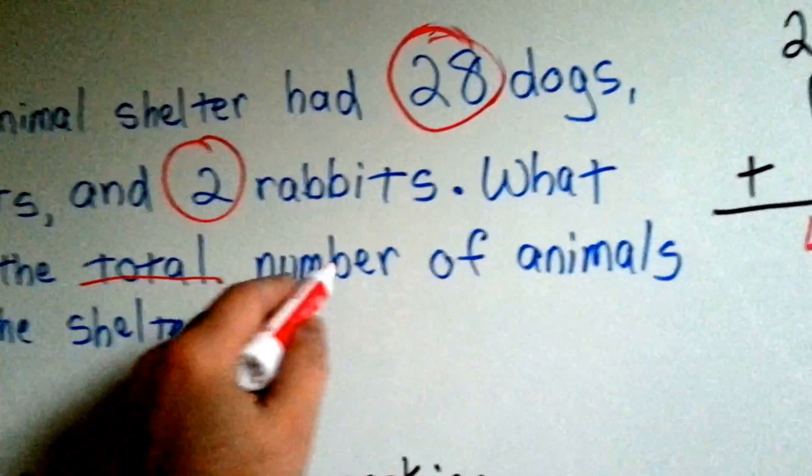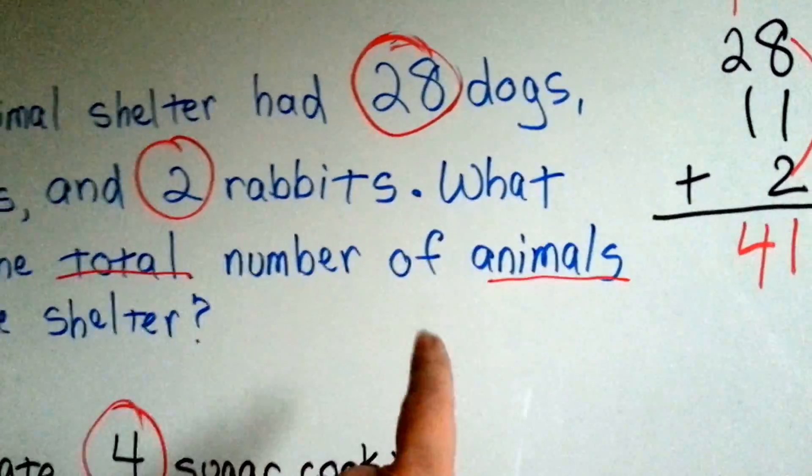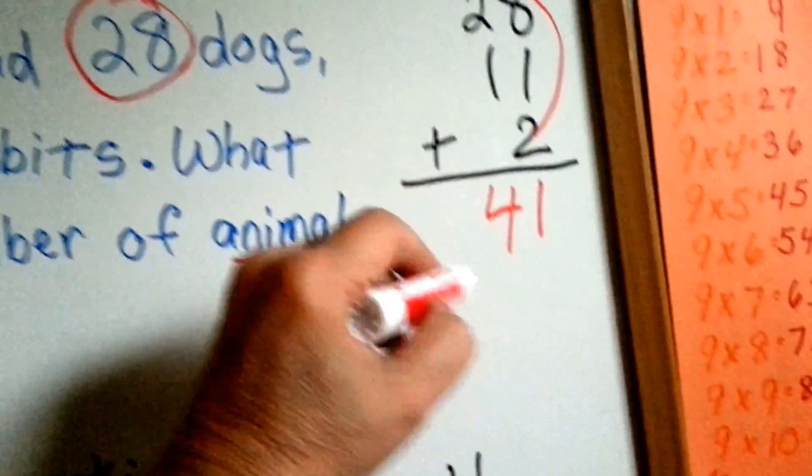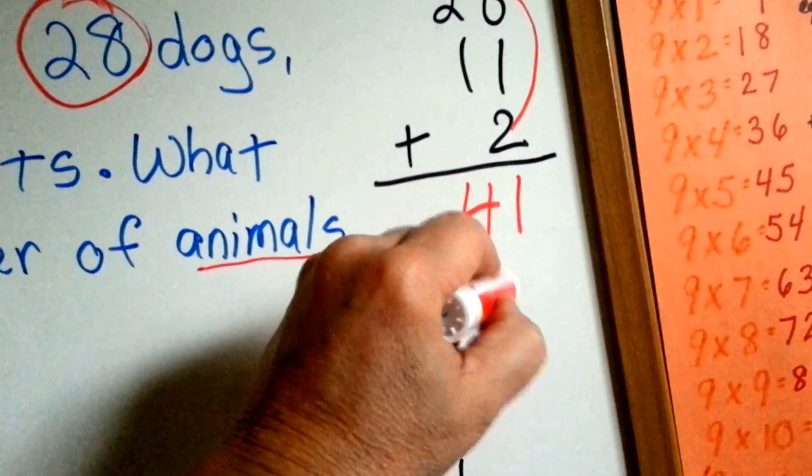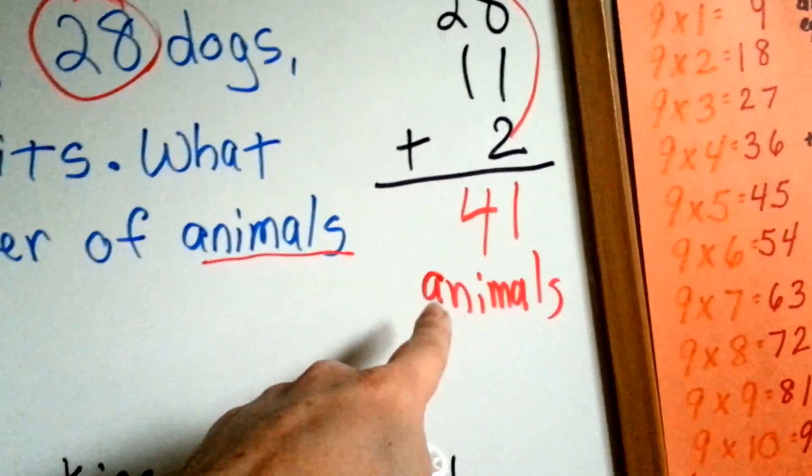For this, the total number of ANIMALS. So this would be 41 ANIMALS. This is called labeling your answer.